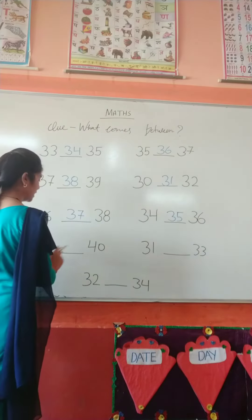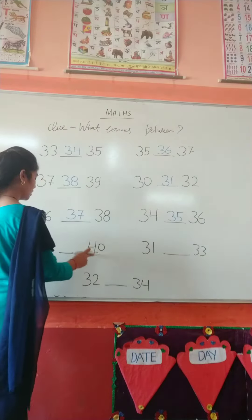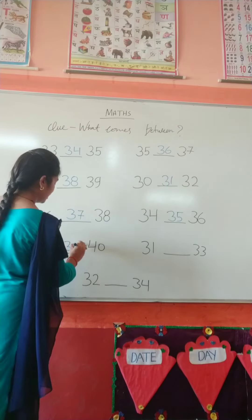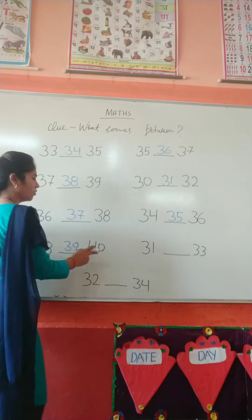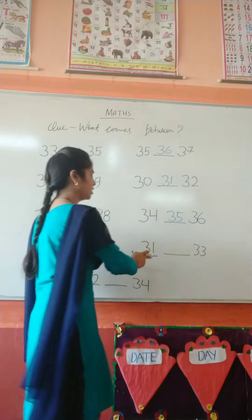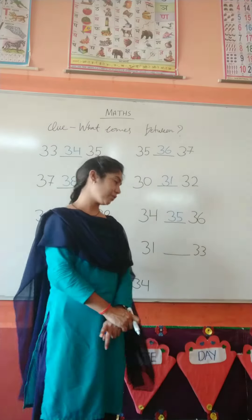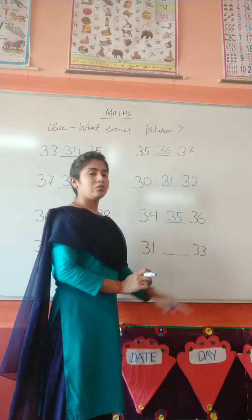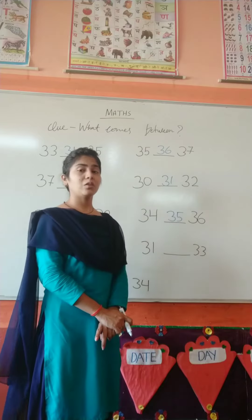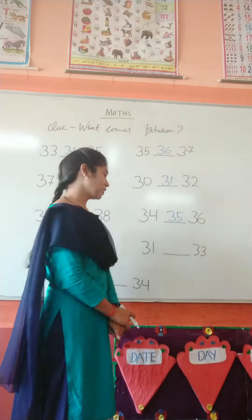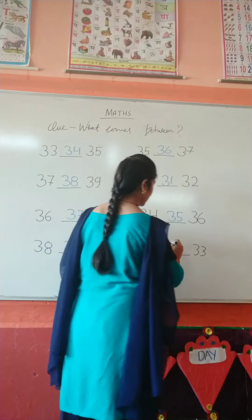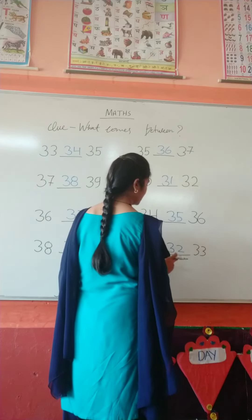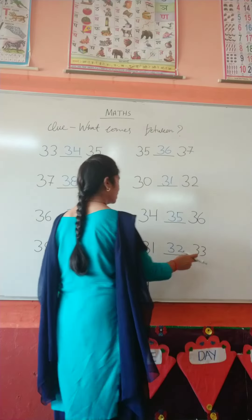What comes between 38 and 40? 39. 38, 39, 40. Which number is this? Here is number 31, and here 33. What comes between 31 and 33? 32. 31, 32, 33.